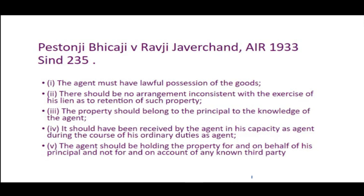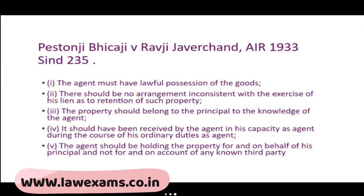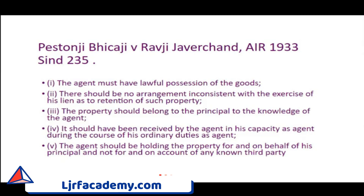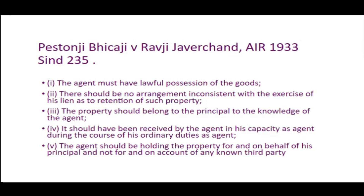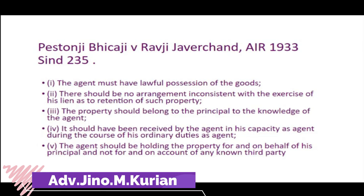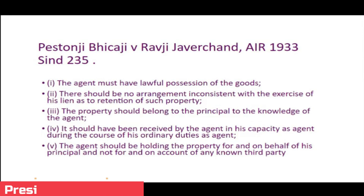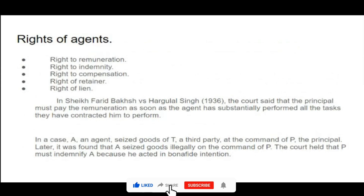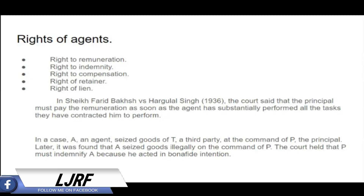Third, the property should belong to the principal to the knowledge of the agent — he must be in good faith believing these are the goods of the principal. Fourth, the goods should have been received by the agent in his capacity as agent during the course of his ordinary duties. Fifth, he should be holding the property for and on behalf of his principal, and not on behalf of any third person. That is what Section 221 covers.